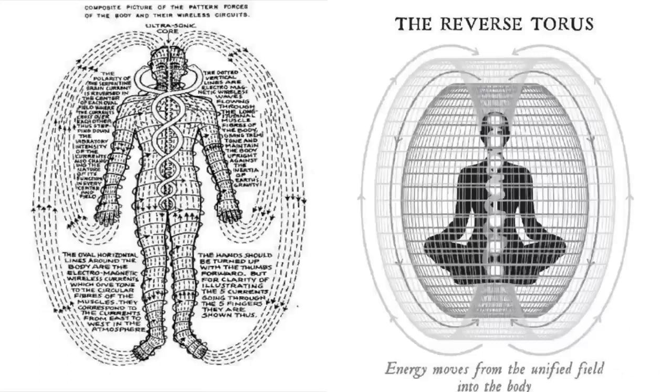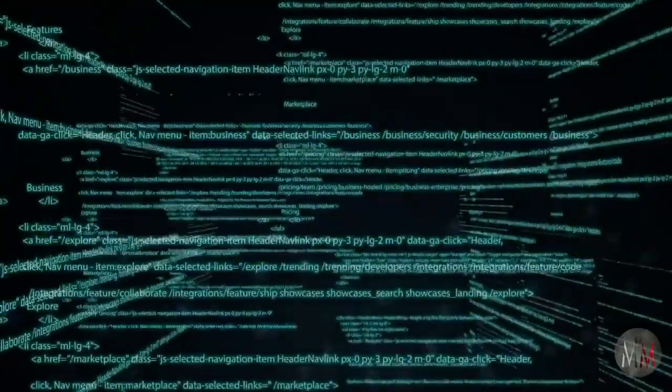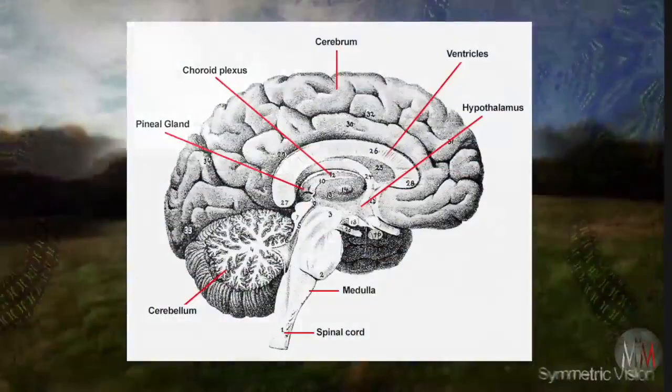When energy moves from the body to the brain, a torus field is created around the body. When the pineal gland becomes activated, a reverse torus field of electromagnetic energy moving in the opposite direction draws energy through the top of the head into the body from the unified field. Since energy is frequency and frequency carries information, the pineal gland transduces that information into vivid imagery.